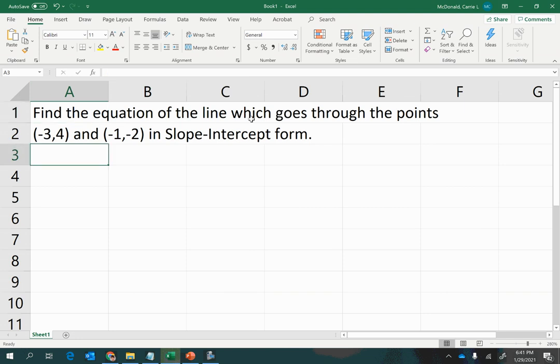Find the equation of the line which goes through the points (-3, 4) and (-1, -2) in slope-intercept form.